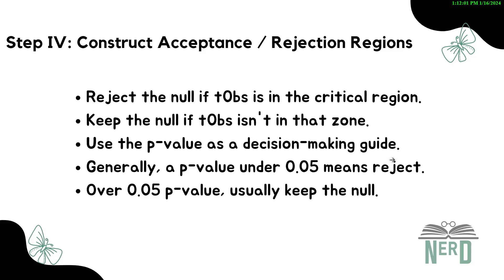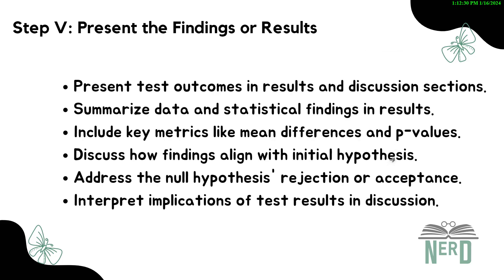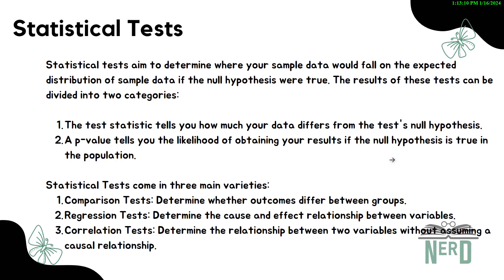Step four is to construct the acceptance and rejection region — this is where you really make a call. Do you have enough evidence to confidently say your initial guess was right? You look at a value called the p-value. If the p-value is really low, typically less than 0.05, it's like saying this isn't just a coincidence — something is going on — and you might reject the null hypothesis. Step five is to present the findings or results. You share what you found, not just what you discovered but also the numbers that got you there. In the end, you say whether your original guess was supported or not — did men turn out to be generally taller than women, or was there no significant difference? That's how you do hypothesis testing.